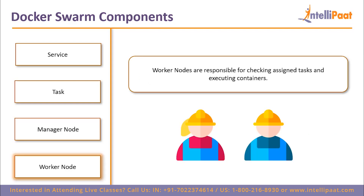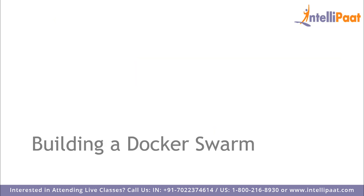Then the worker node. Worker nodes are responsible for checking assigned tasks and executing containers. A worker node will be responsible for two things: performing its task and running the container. So Docker Swarm is basically a bunch of different Docker containers running together to help us deploy an application. It has a hierarchy: you have services, under which you have your manager, under which you have your workers that perform all the tasks. It basically acts as a container orchestration tool and hence can be very useful while deploying an application.